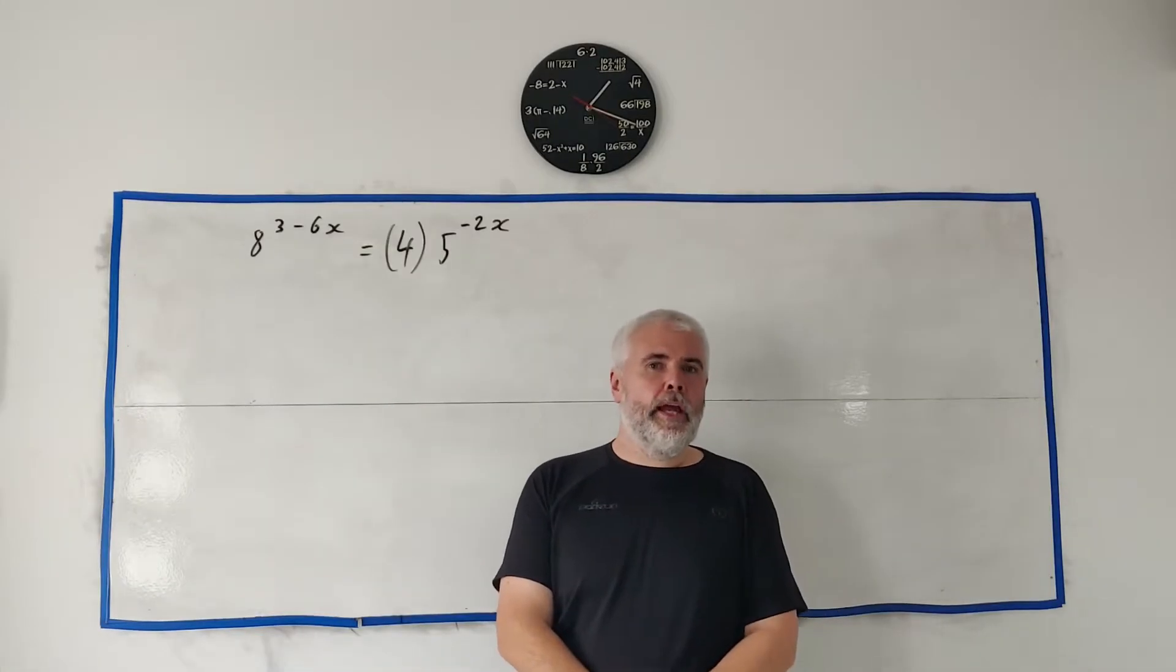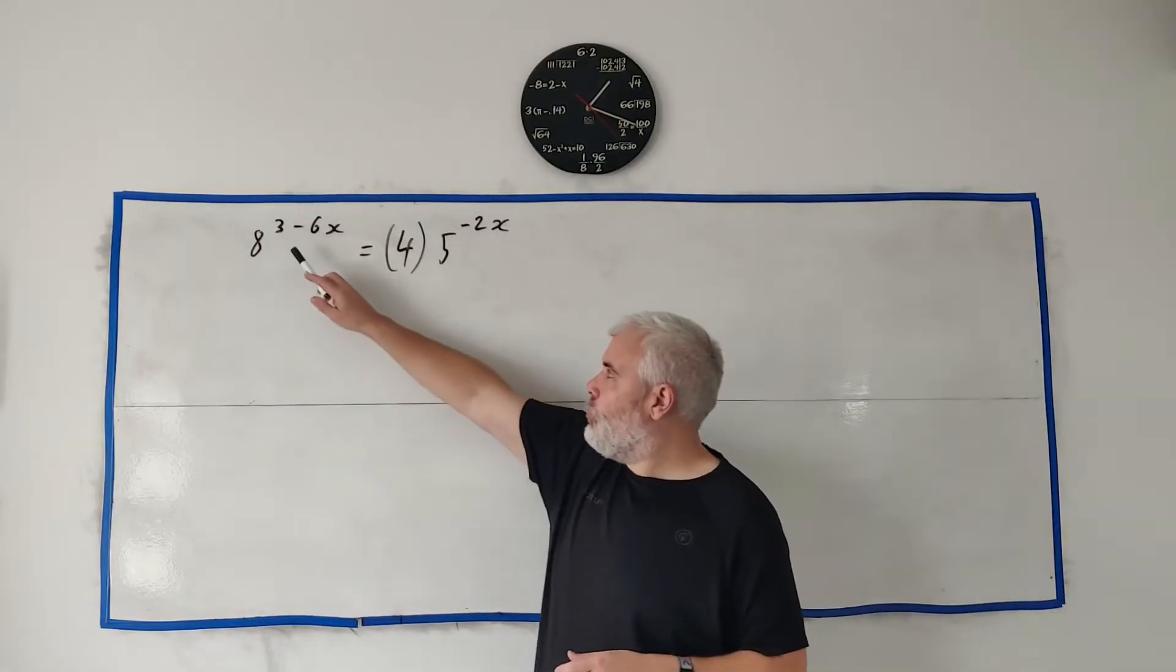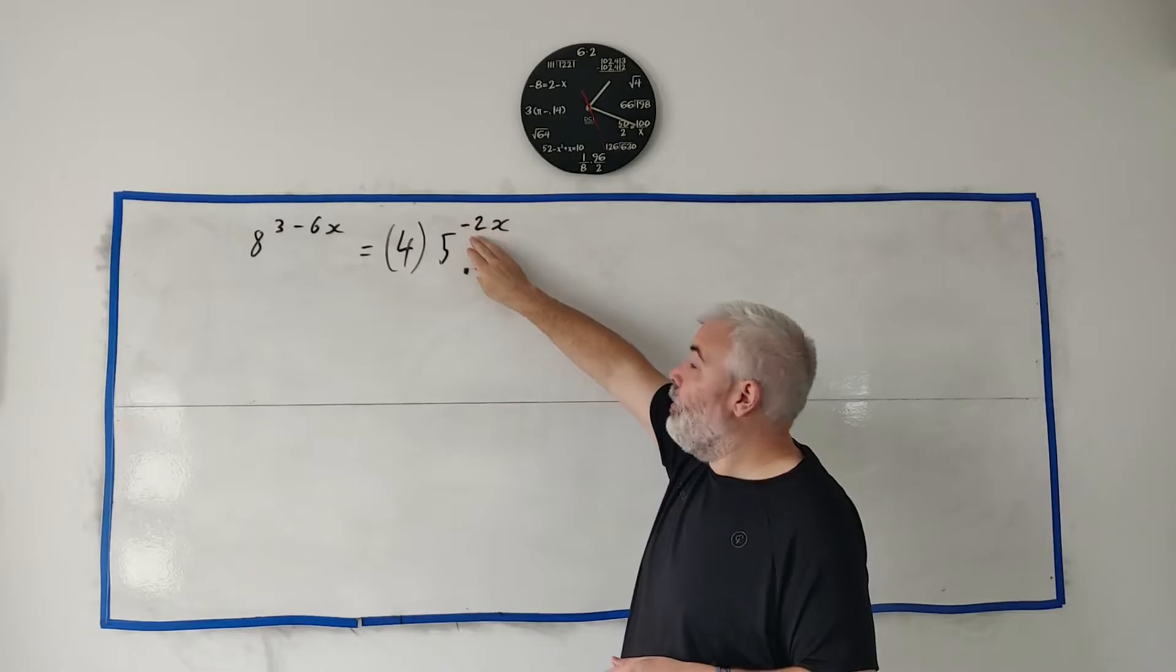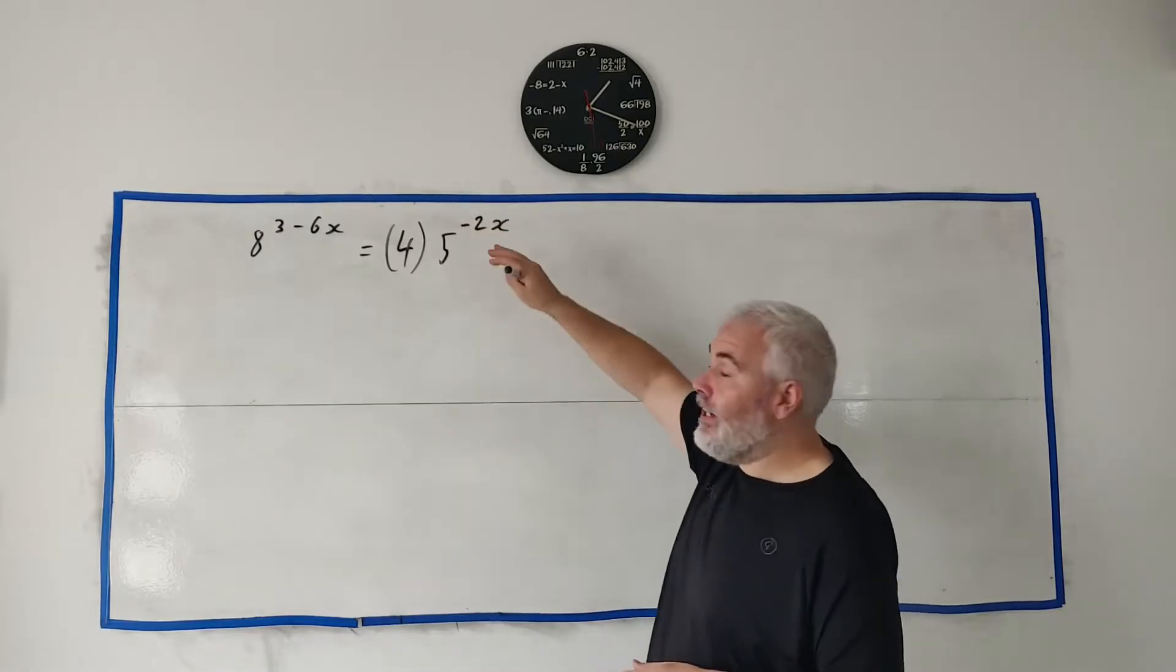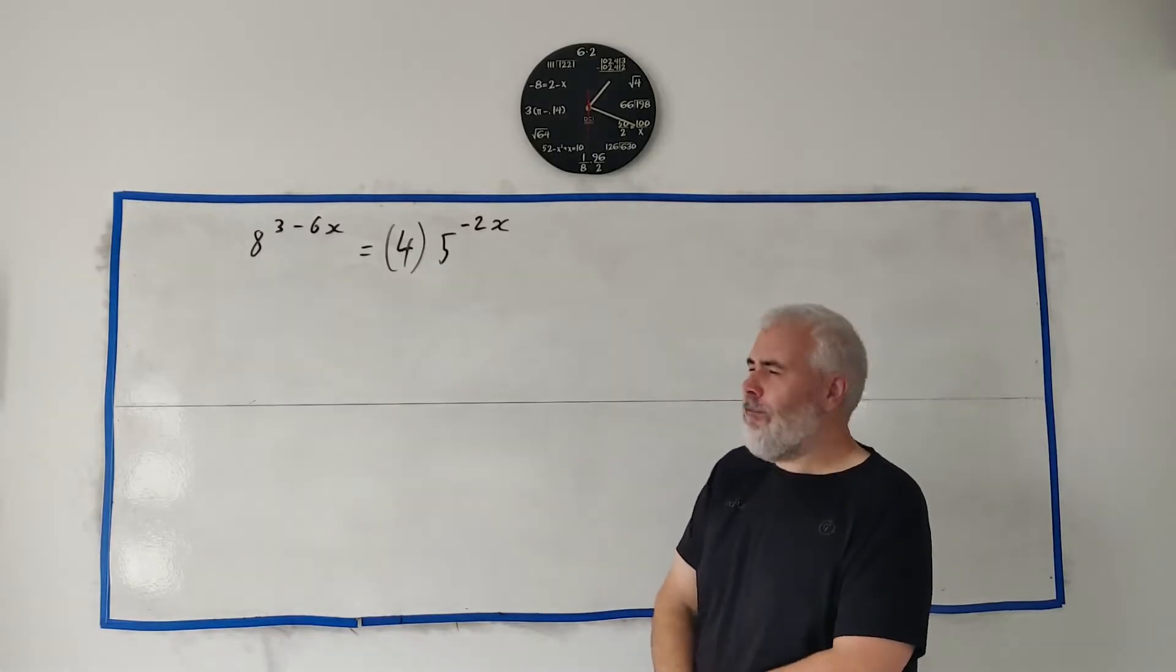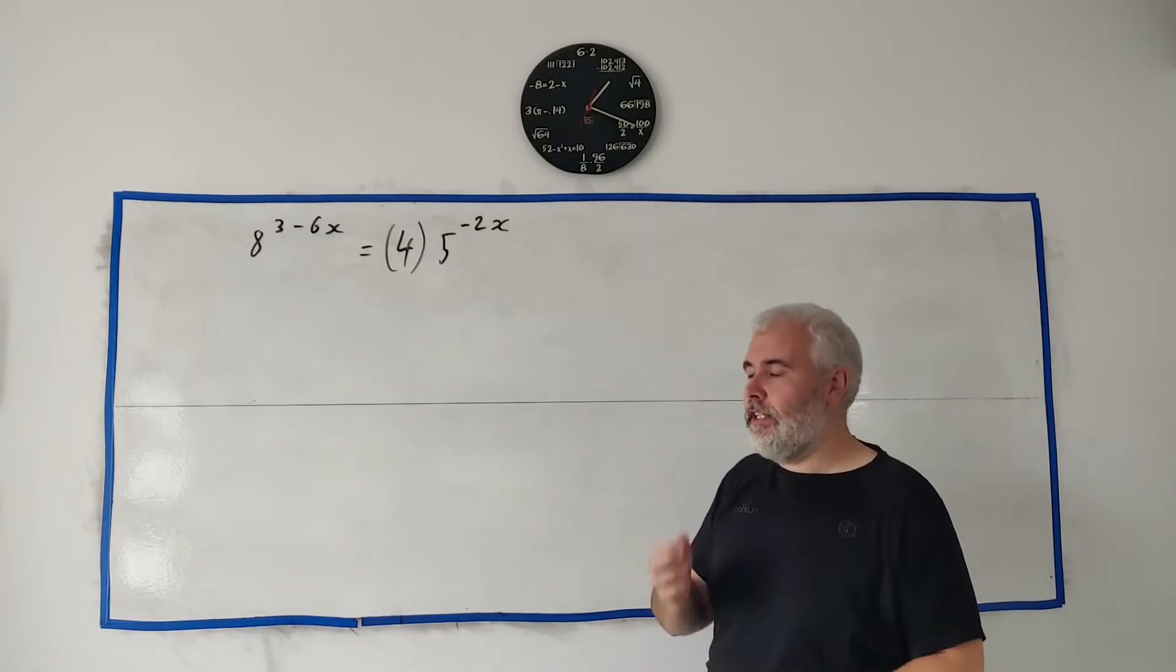In question 1 we have 8 to the power of 3 minus 6x is equal to 4 times 5 to the power of minus 2x. So the x is in the power so we have to deal with that. There is a few ways to do this question.